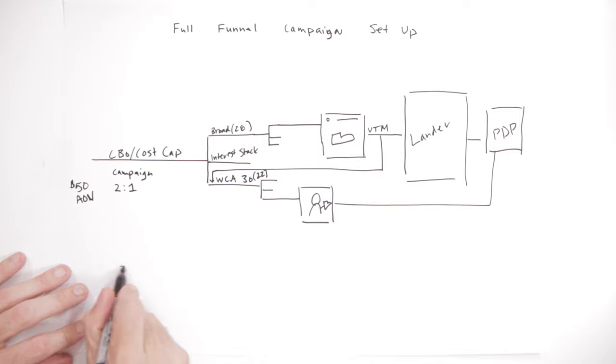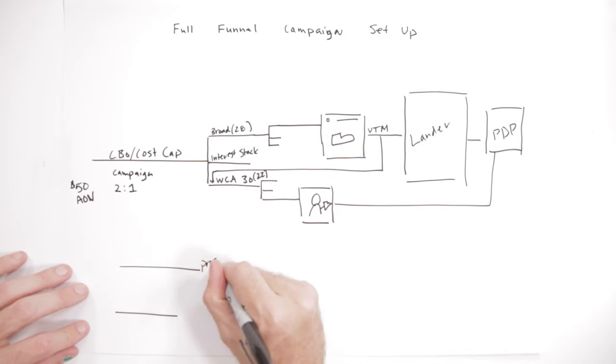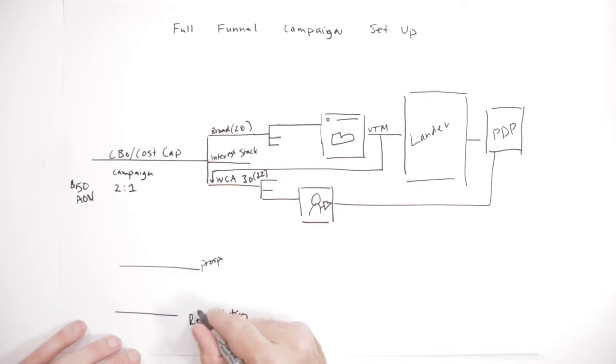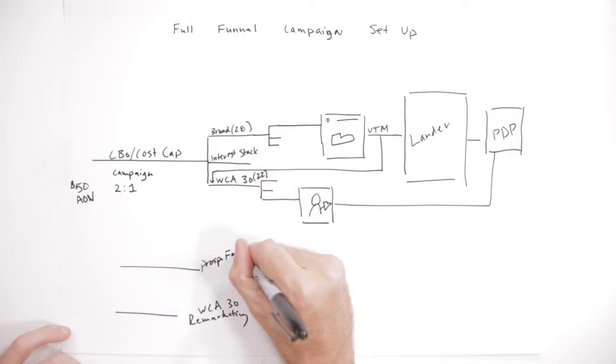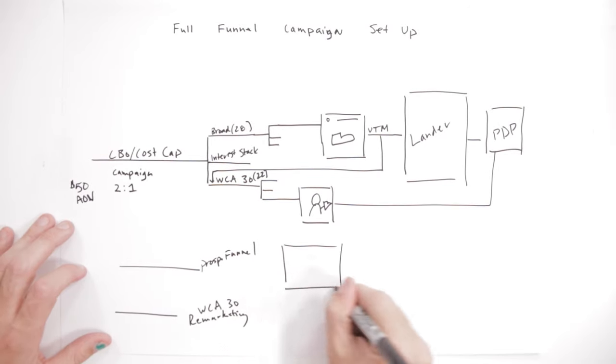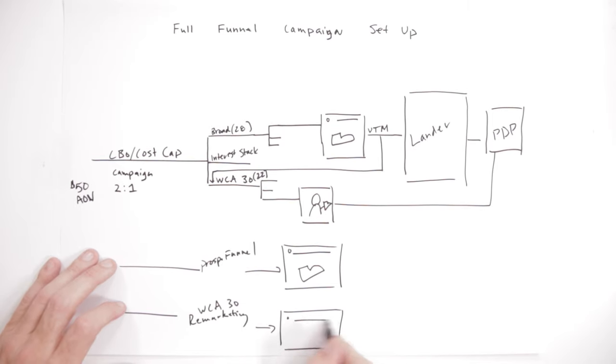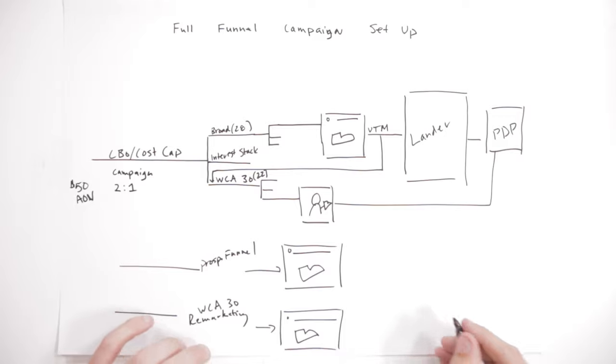The problem when you break up prospecting and remarketing into different phases. I have prospecting here and remarketing here. And it's a generalized remarketing budget. So this remarketing holds everybody who's been to my website. Call it a general WCA 30. And then I have a prospecting funnel up here. Well Facebook, what it does is if you see both of these ads, it's going to assign value to what it calls last interaction. So it's going to assign the sale to the last interaction of the user, which is most commonly going to be this.